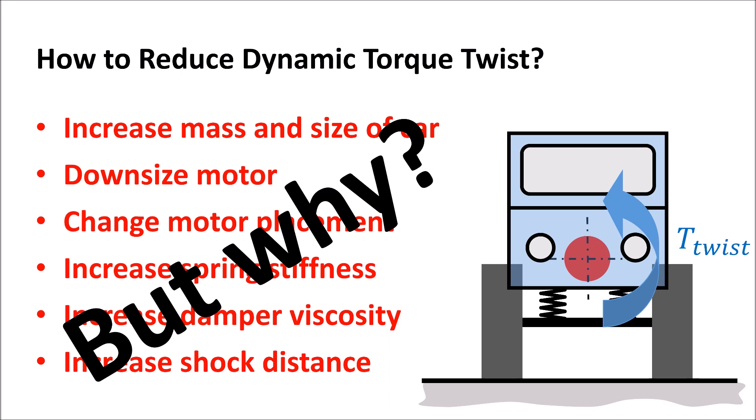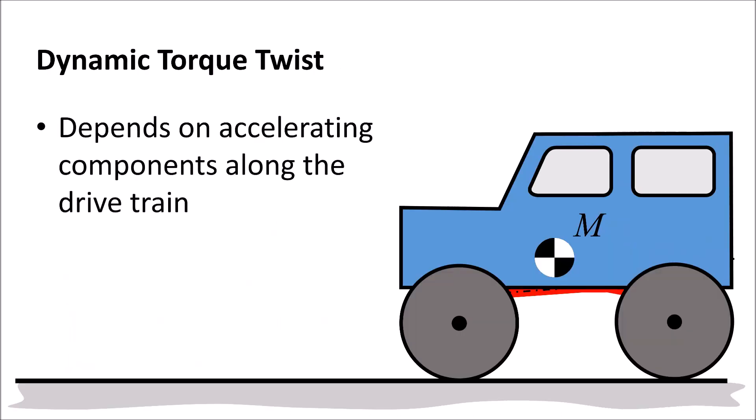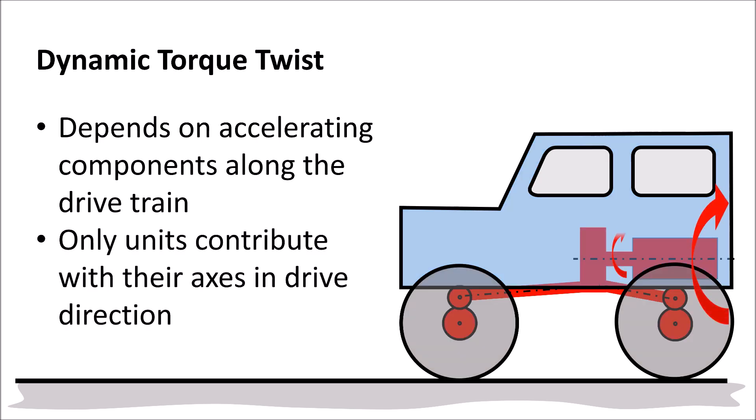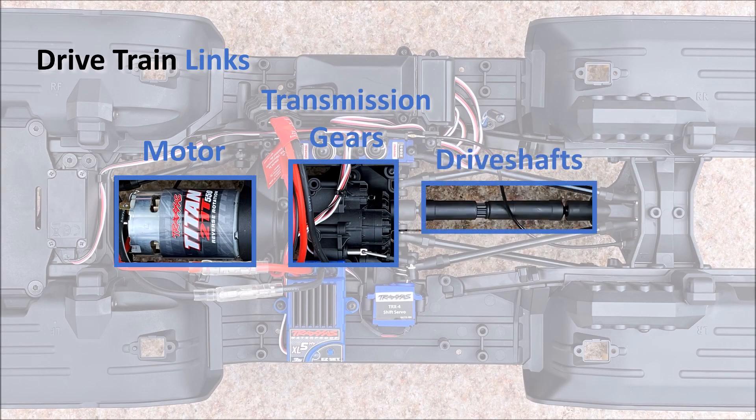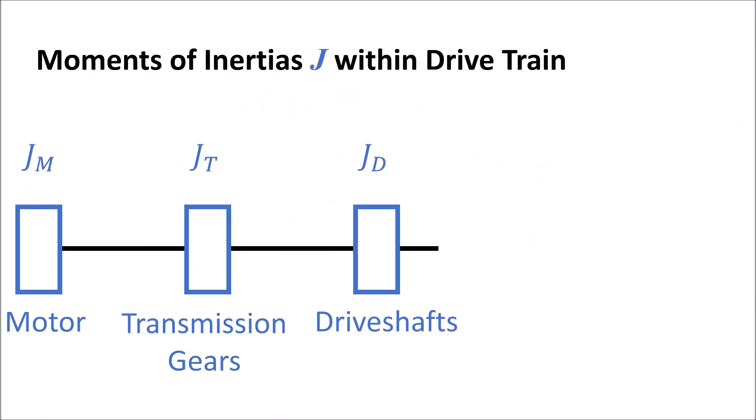Let's go into detail. The magnitude of the dynamic torque twist depends on the properties of the accelerating components along the drivetrain. Only those units contribute that have their rotating axis in drive direction, such as the motor itself, the transmission gears, and the driveshafts. All of these components have their own moments of inertia and rotational speeds.